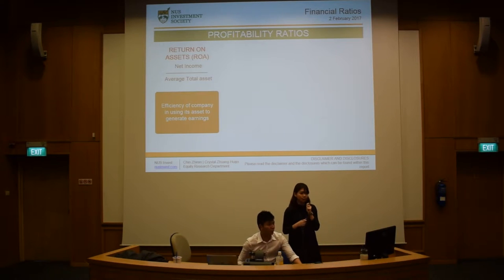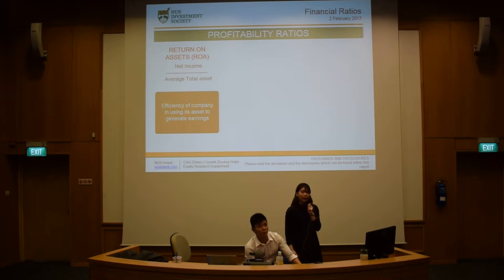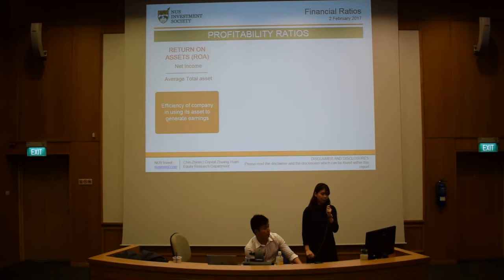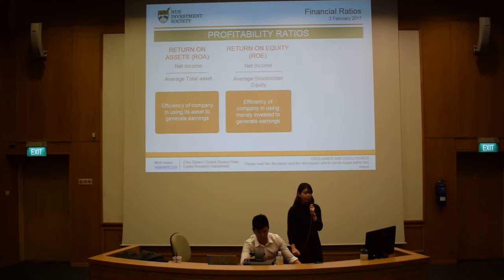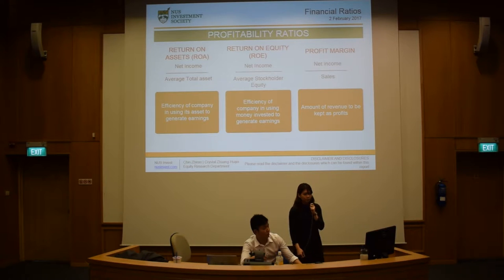Now we move on to profitability ratios. The first one is return on assets, or ROA, which is net income over average total assets — it measures the efficiency of a company in using its assets to generate earnings. The next one is return on equity, which is net income over average stockholders' equity, measuring efficiency in using invested money to generate earnings. The last one is profit margin, which is net income over sales, measuring the amount of revenue kept as profits.